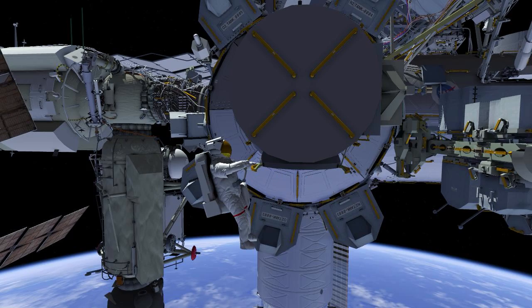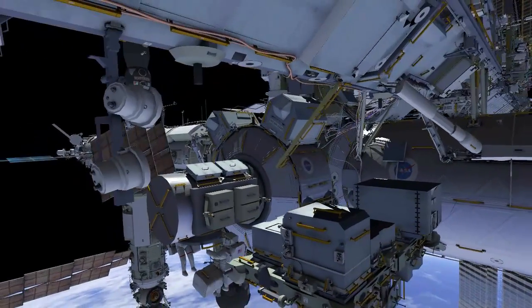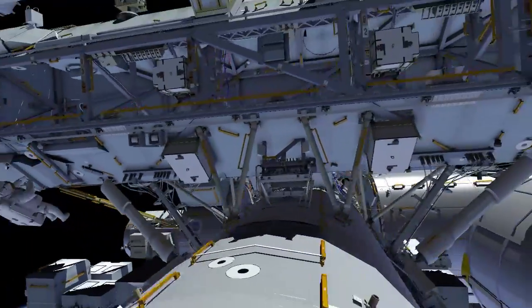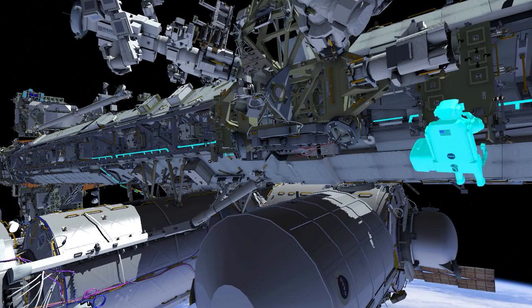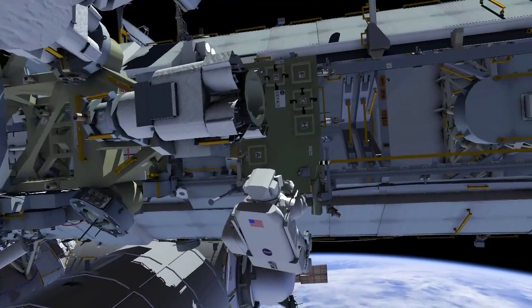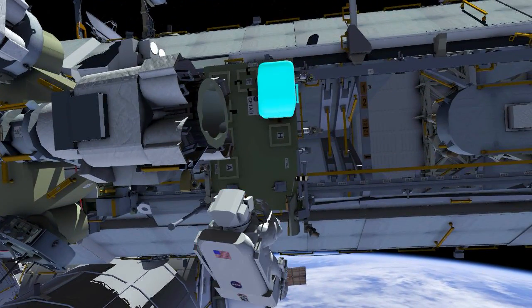EV1 with red stripes and EV2 with white stripes egress the crew lock with tool bags. EV2 goes to the forward phase of the station, then port to a crew equipment translation aid cart.